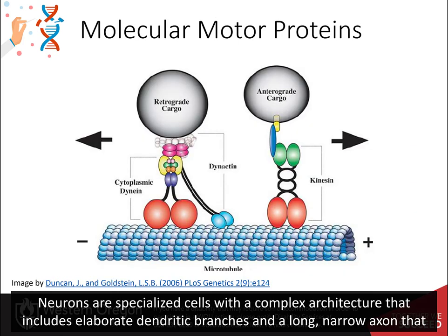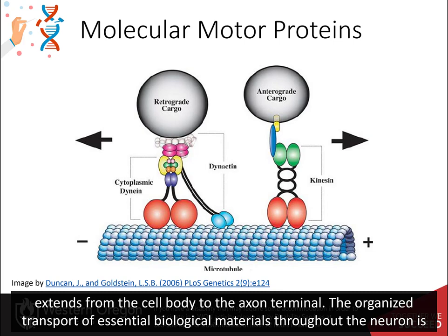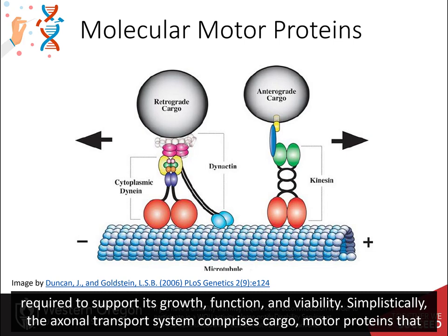Neurons are specialized cells with a complex architecture that includes elaborate dendritic branches and a long, narrow axon that extends from the cell body to the axon terminal. The organized transport of essential biological materials throughout the neuron is required to support its growth, function, and viability.